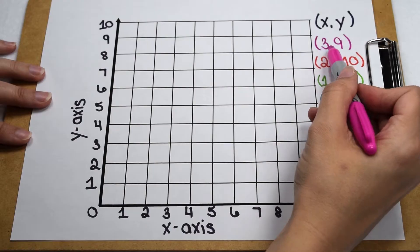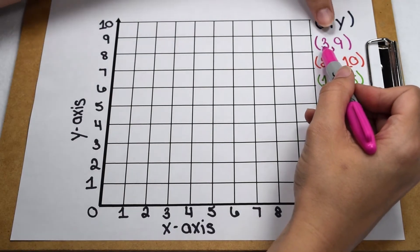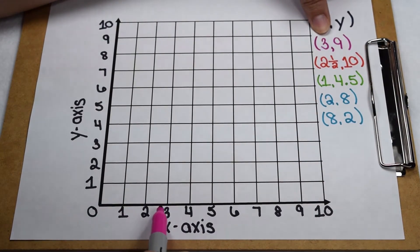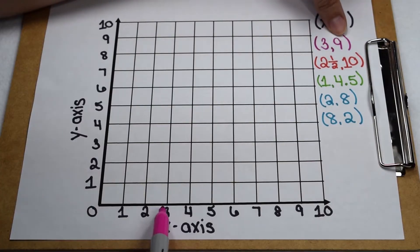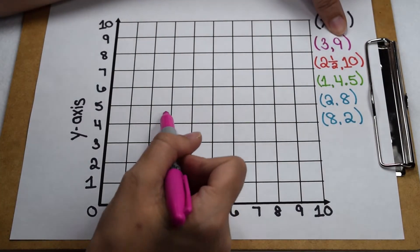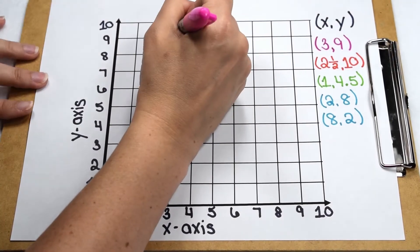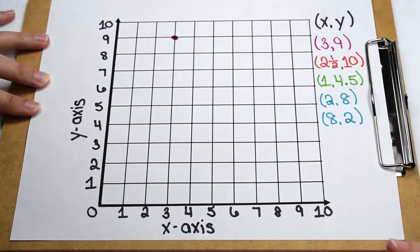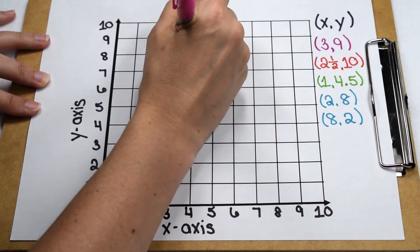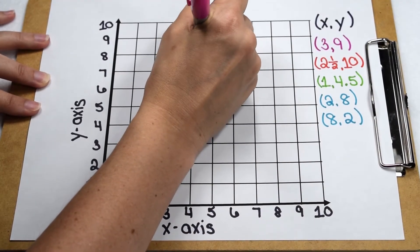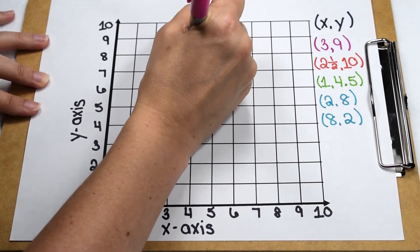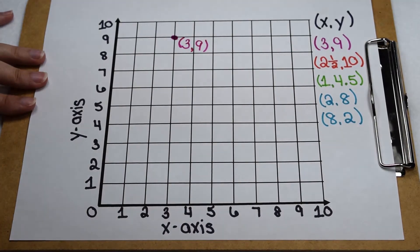If we're going to plot the point, I first need to go across three places on my x-axis. Then, my y value is nine, so I need to go up nine places on my y-axis. Where the two intersect, I can go ahead and make my point. So that others know what point this is, we can go ahead and label it. I'm going to label this and put it inside a set of parentheses with the comma separating the values.